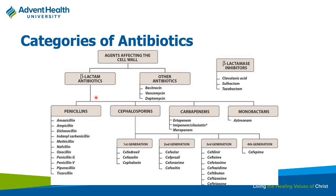Getting into our first class of antibiotics, the main thing we're going to hit first is going to be the ones affecting the cell wall. This is a good table to kind of go back to. You can see how you can put these into different categories. Agents that affect the cell wall — getting into beta-lactam antibiotics: penicillin, cephalosporins, carbapenems.